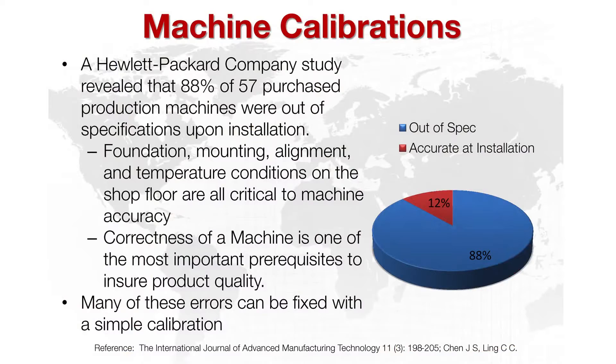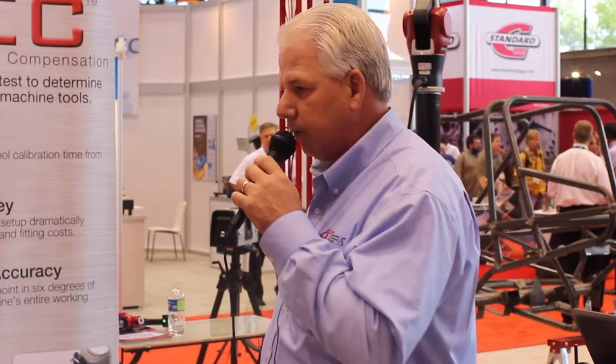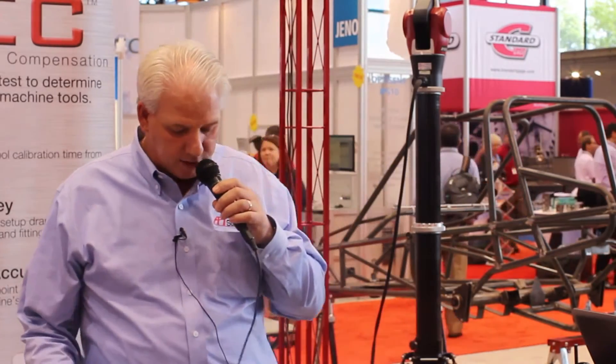A study from Hewlett Packard discovered that out of 57 machines installed in a production area, 88% were found to not meet the acceptance requirements, meaning the parts those machines were going to manufacture were not going to meet customer requirements either. So basically, a good calibrated machine means good parts.